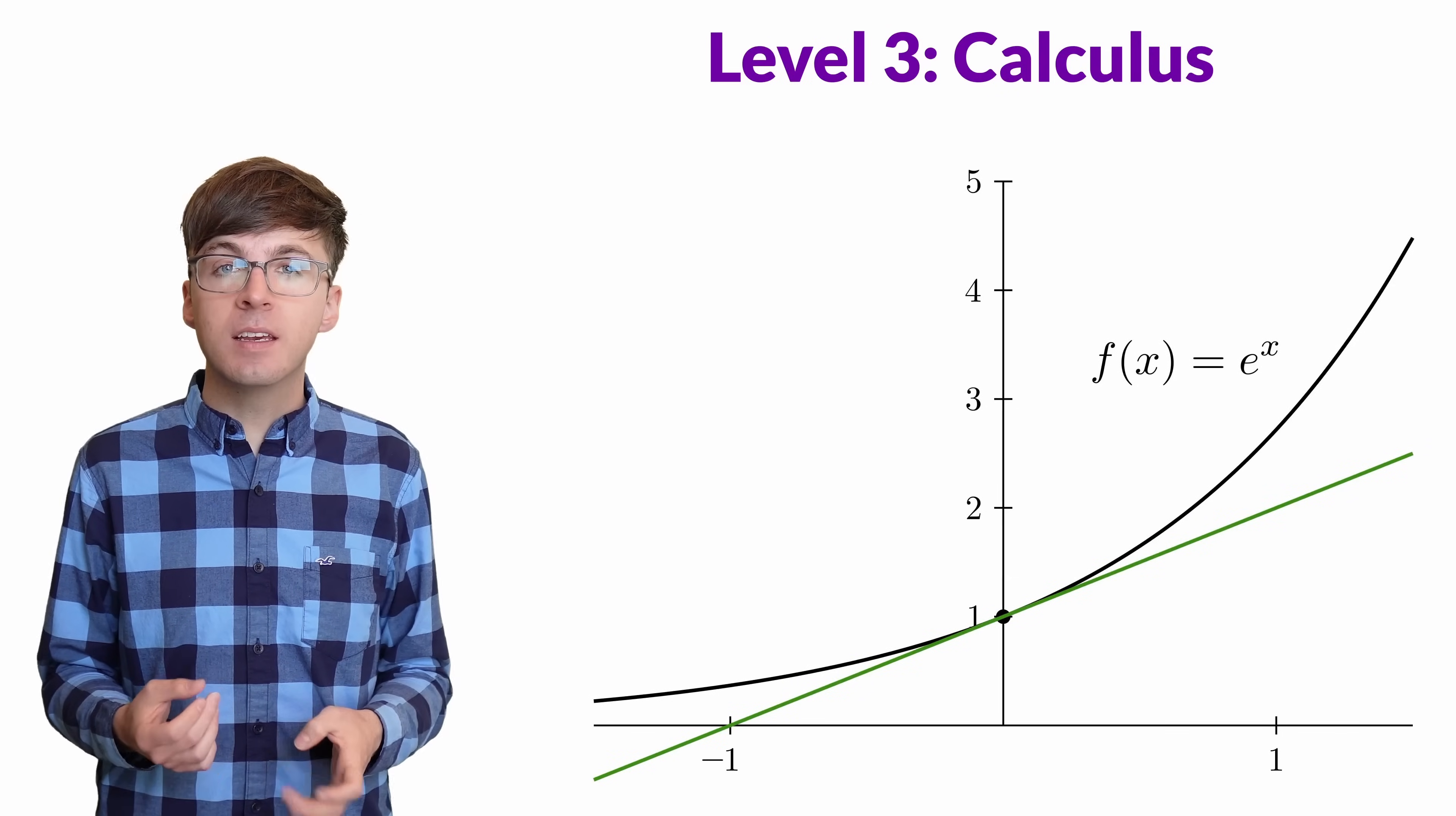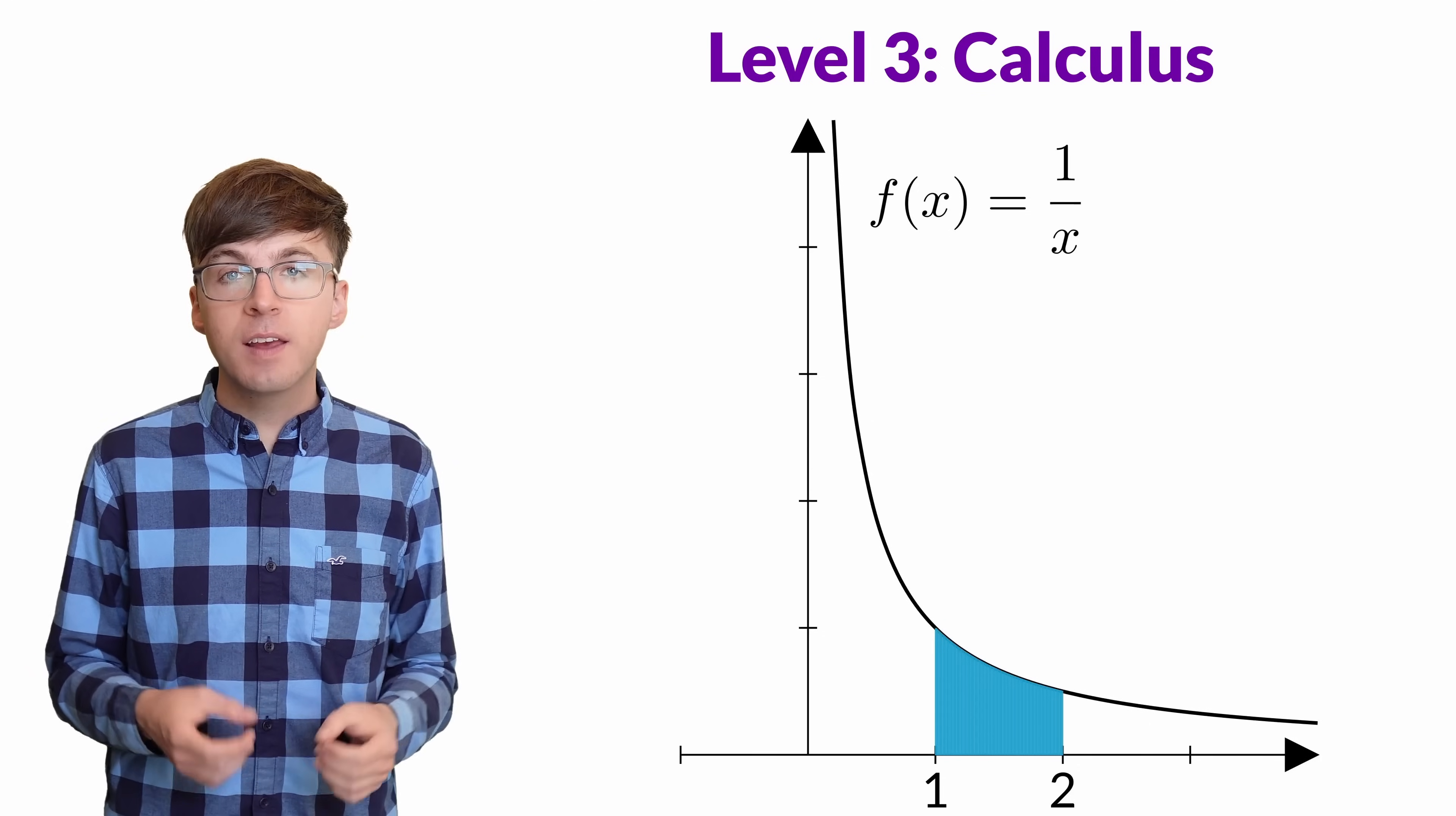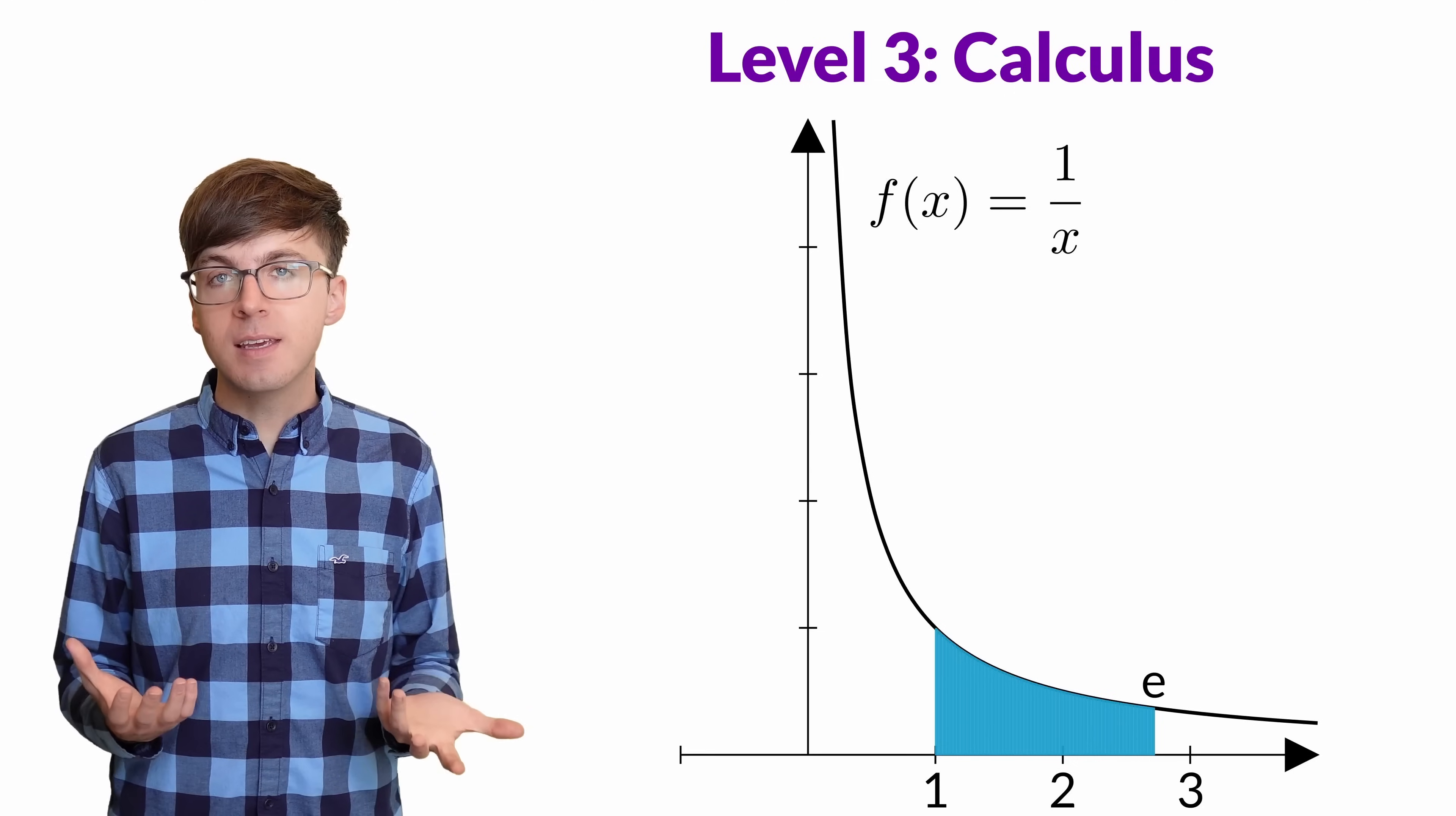We could also define e by thinking about an integral. If we look at the integral of the function 1 over x, let's find the area under the curve between 1 and 2. This area is a bit less than 1. If we find the area under that same function between 1 and 3, now the area is a bit more than 1. So for some value between 2 and 3, this area will be exactly 1. And again, that value is e.